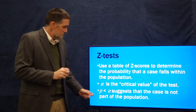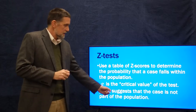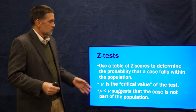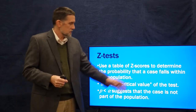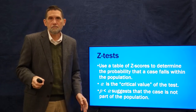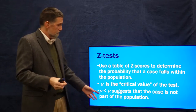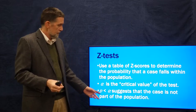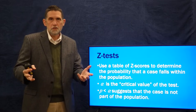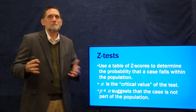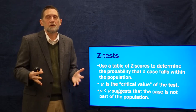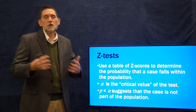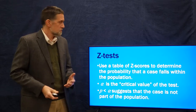If the probability, the p-value, is less than alpha, the critical value, then that suggests the case is not part of the population. In other words, if p is less than alpha — if using an alpha of 0.05, the p-value is less than 0.05 — we reject the null hypothesis. If it's greater, we accept the null hypothesis.